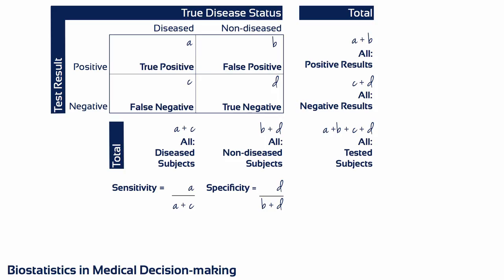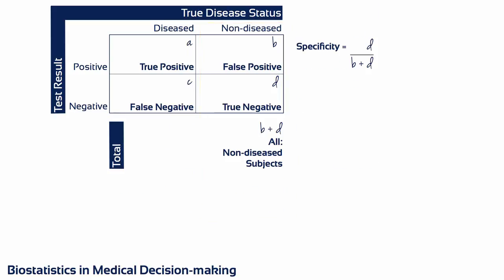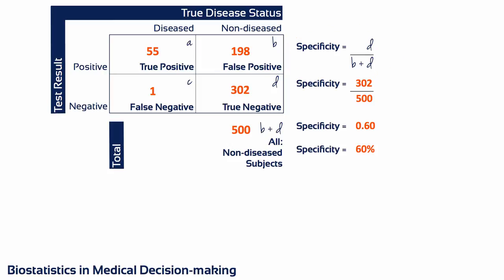To calculate specificity, you need to pay attention to the right-hand column. Specificity equals D divided by B plus D. So if we use the same data, then specificity equals 302 divided by 500, which is 0.6 or 60%.